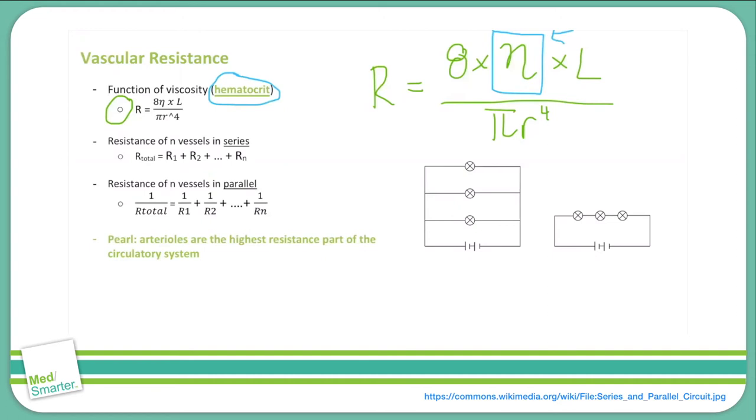Now how about length? Length is another linear relationship, so if we double the length we'll have doubled the resistance. That's pretty easy.